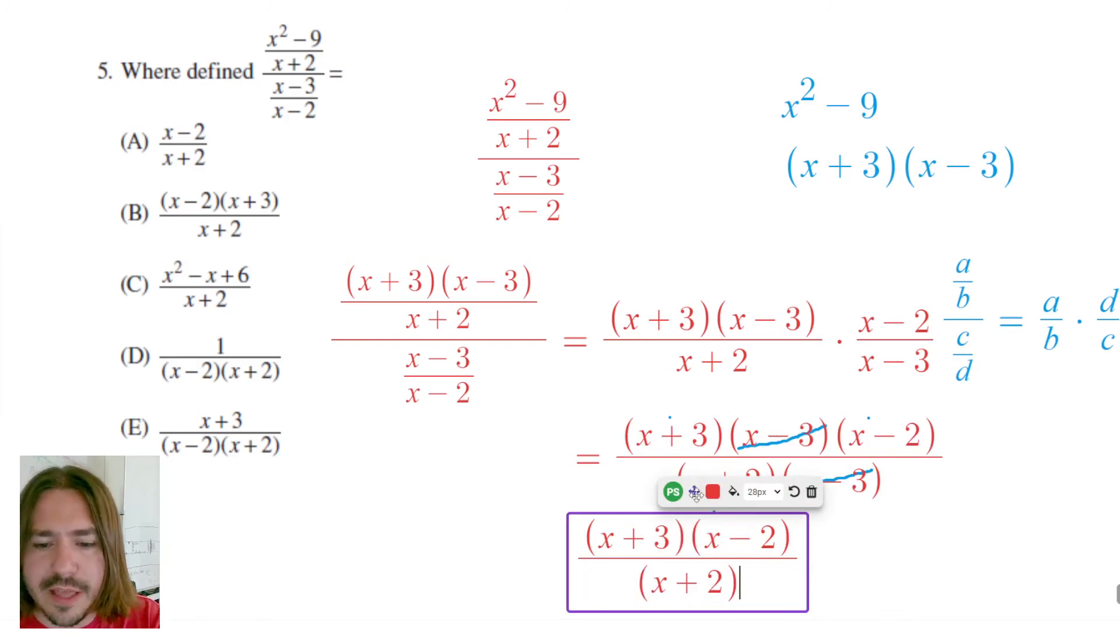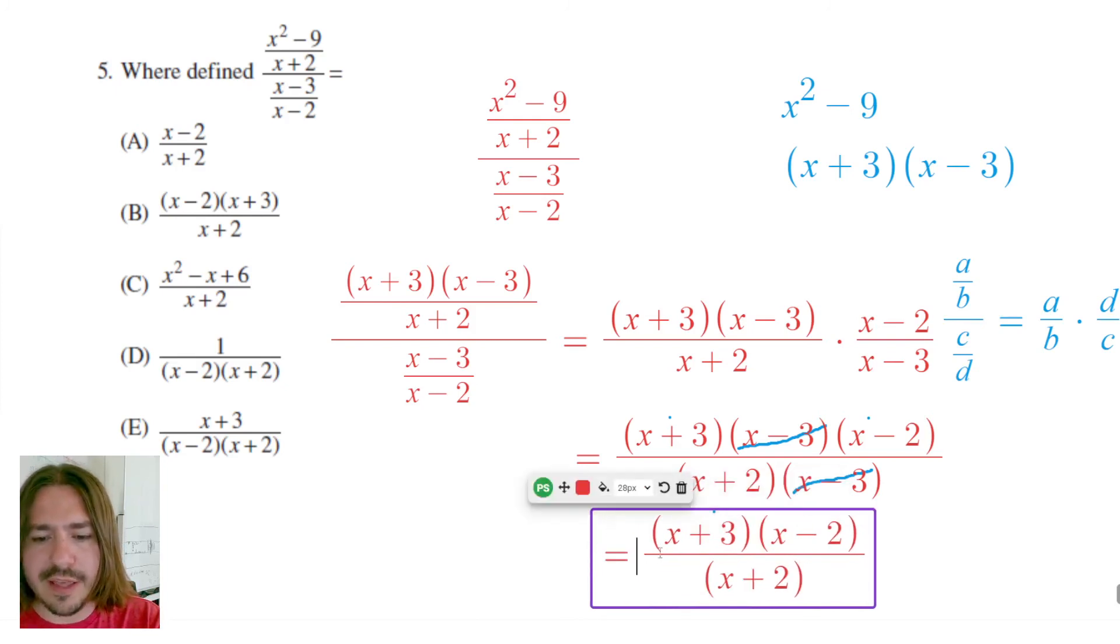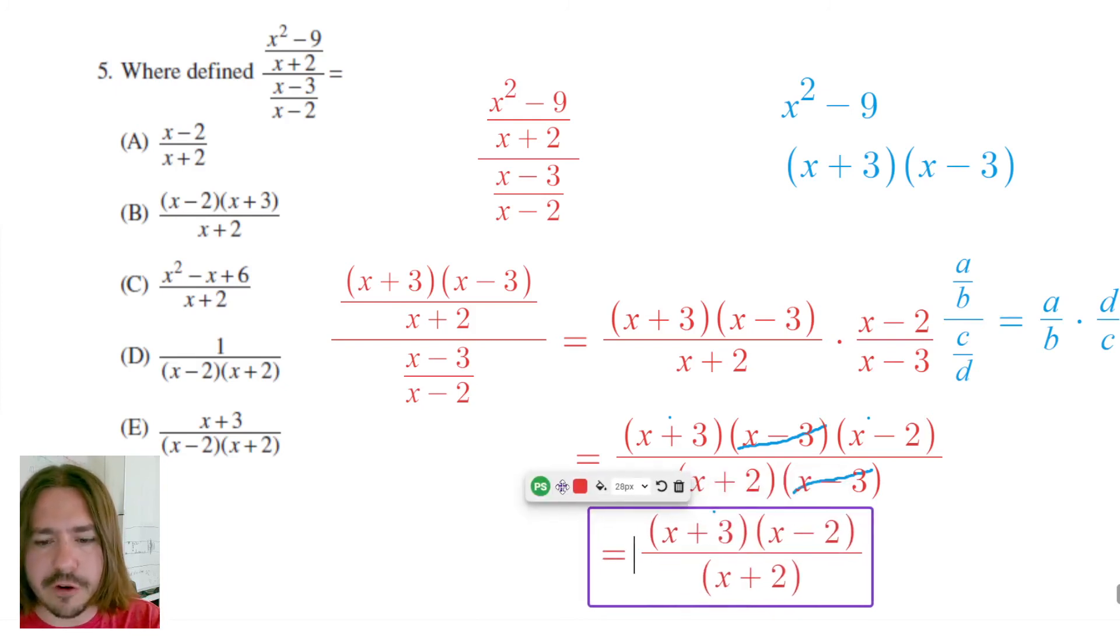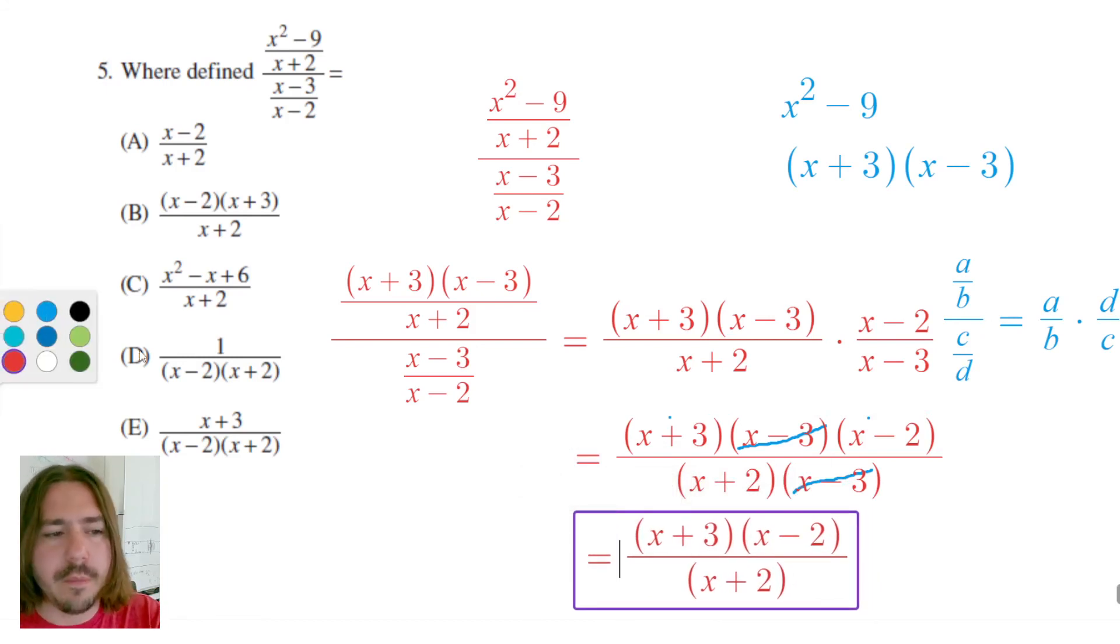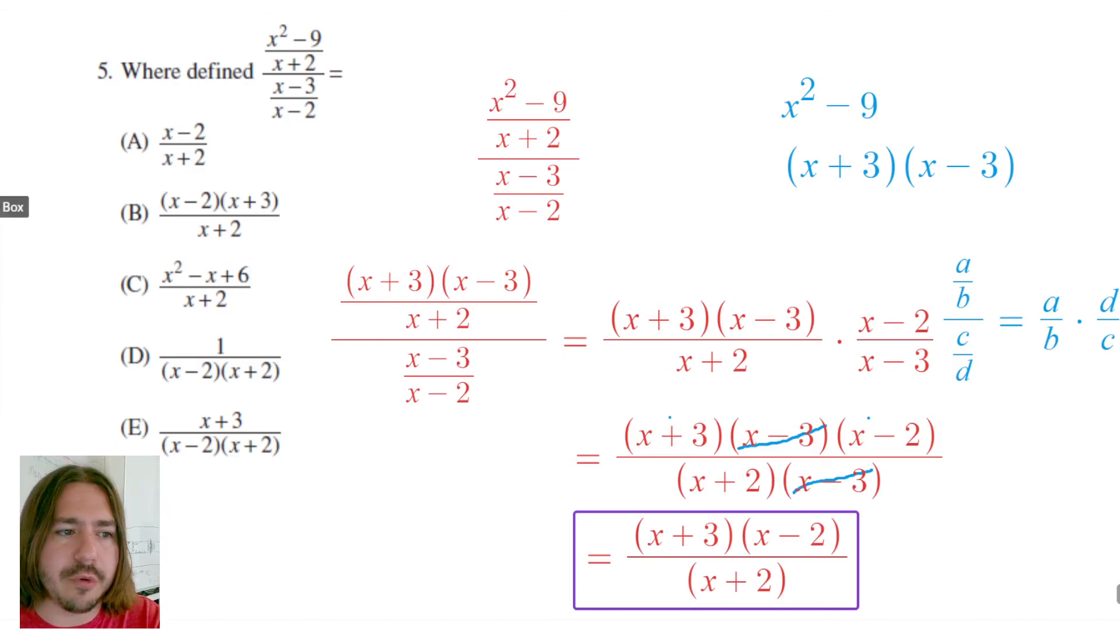You might notice that in the answer choices here, in the multiple choice, it has the X minus 2 first, and that's okay. Multiplication is what we call commutative, meaning that the order of multiplication doesn't matter. In other words, like 2 times 3 is equivalent to 3 times 2. So our correct answer here is going to be B.